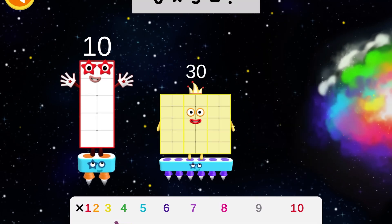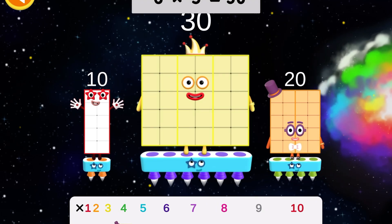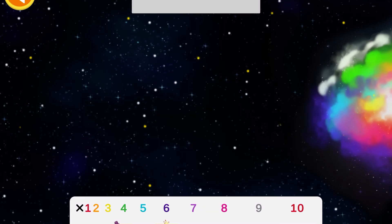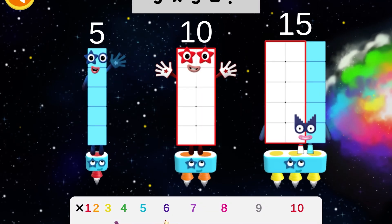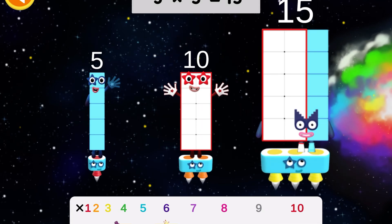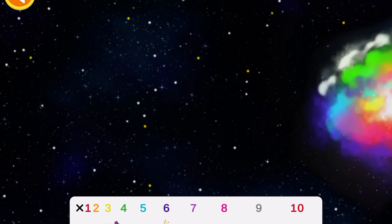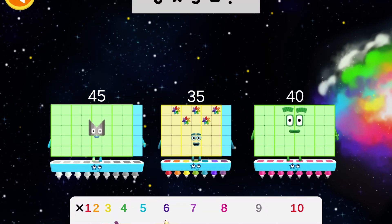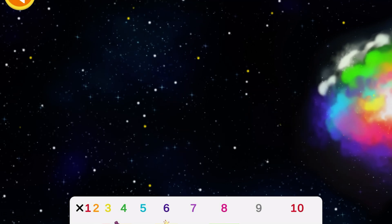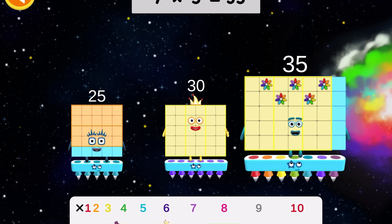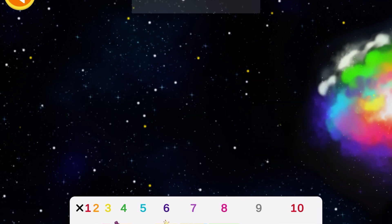6 times 5 equals 30. 3 times 5 equals... 8 times 5 equals 40. 7 times 5 equals 35.